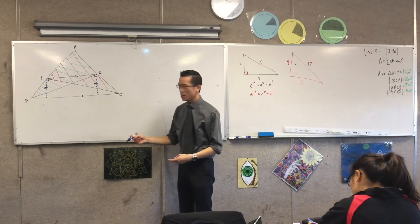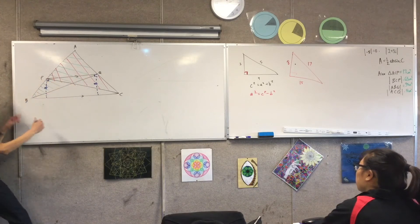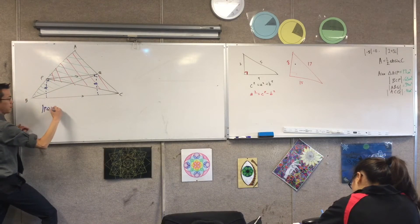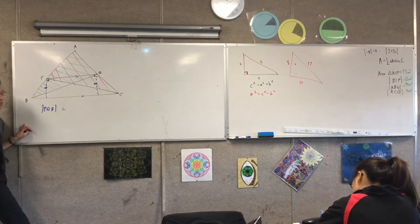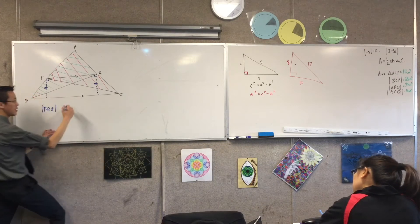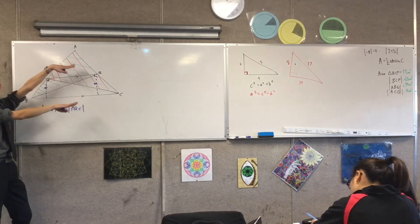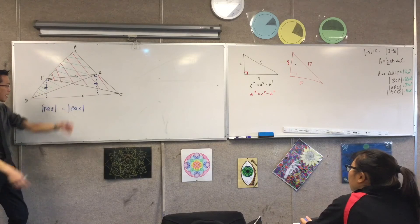So, therefore, I can say, how can I use my notation here? Triangle PQB. Triangle PQB must be equal to triangle... Help me out. Yeah, PQC. Because, same base, and they're between parallel lines, so therefore they share the same perpendicular height.